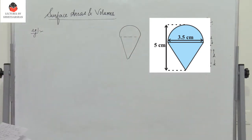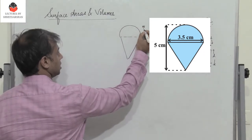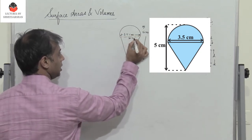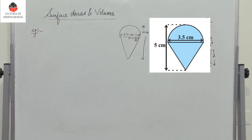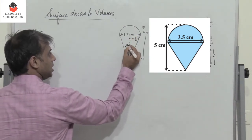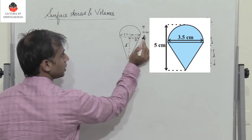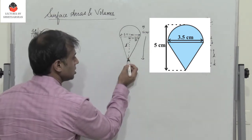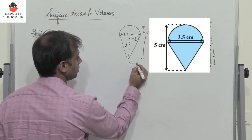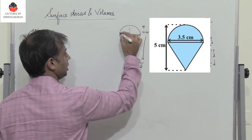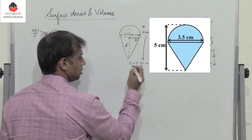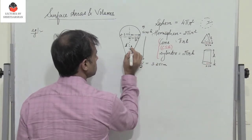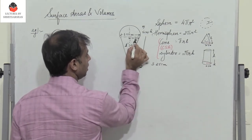The top has a cone and a hemisphere. The total height is 5 centimeters and the diameter is 3.5 centimeters, so the radius r is 3.5/2. Let h' be the height of the cone and h be the height of the hemisphere. So h' is 5 minus 3.5/2, because 3.5/2 is the radius of the hemisphere. That gives h' = 5 − 1.75 = 3.25 centimeters, and r = 3.5/2.